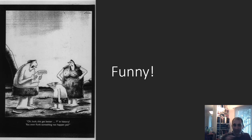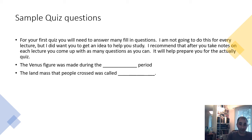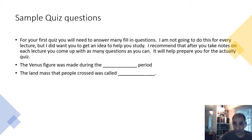You'll have three quizzes during the semester, mostly short-answer fill-in questions. For example: the Venus figure was made during which period? — the Paleolithic. The land mass people crossed during glaciation was called Beringia. As you finish taking notes, practice writing out your own short-answer fill-in questions — it'll really help you review all the lecture material effectively.